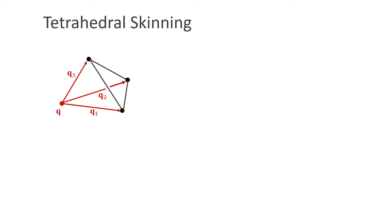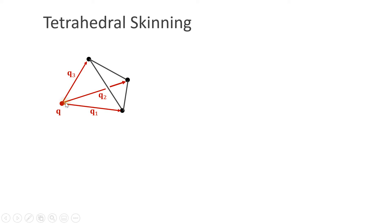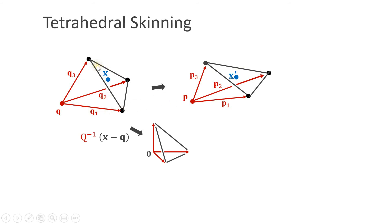We can use inverse matrices for tetrahedral skinning — deforming a visual mesh along with a surrounding volumetric tetrahedral mesh. Given a tetrahedron defined by origin q with vectors q1, q2 and q3, and a deformed version with origin p and vectors p1, p2 and p3, we seek a transformation mapping a vector x to position x prime. We interpret q1, q2 and q3 as column vectors of matrix Q. Applying Q's inverse maps to the unit tetrahedron; then applying the transformation defined by p, p1, p2 and p3 brings us into the deformed tetrahedron.